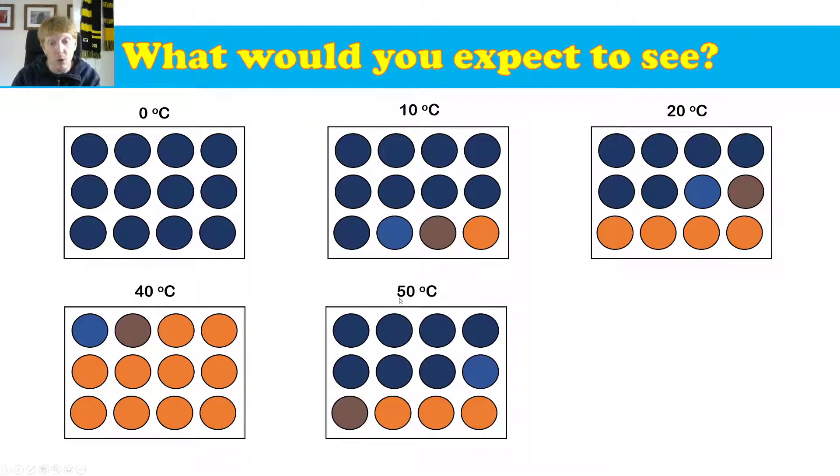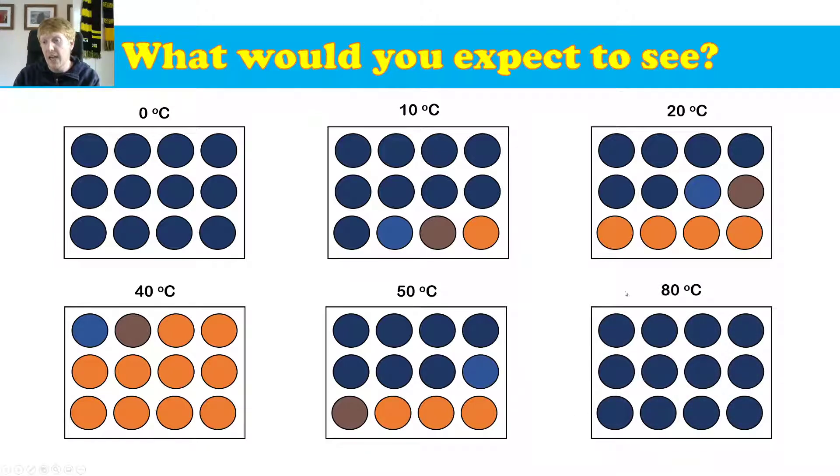50 degrees is starting to get too hot for the enzymes. So the enzymes are starting to break down or denature. So they slow down again. And you can see it taking longer to break down the starch in here. The time taken to break down starch is basically the number of blue circles. And then at 80 degrees, we've completely denatured the enzyme, which means that starch is not broken down again because the amylase enzyme isn't working.